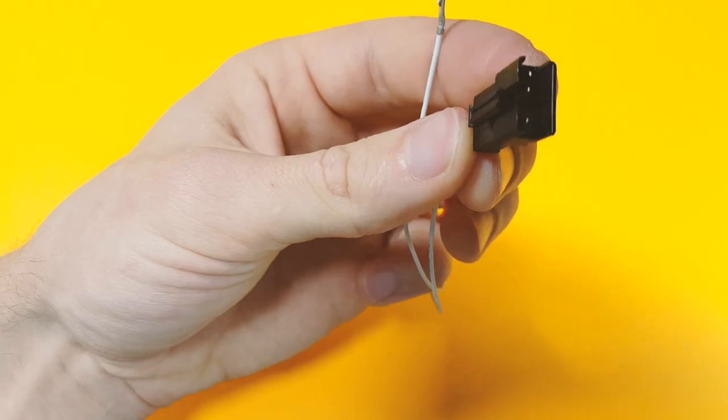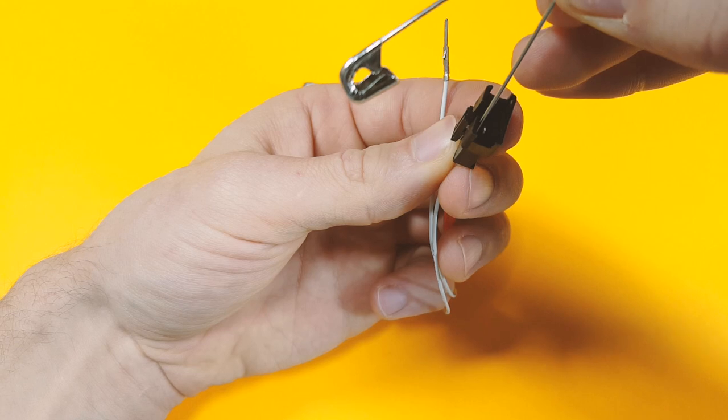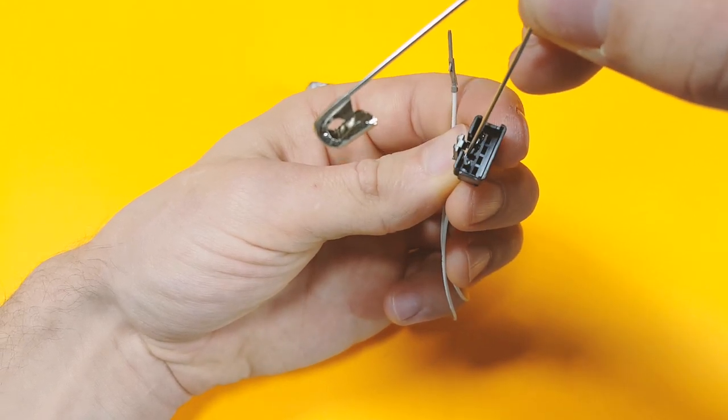You need to take a pin or a needle and shove it into a tiny hole above the crimp from the inside. Right there.